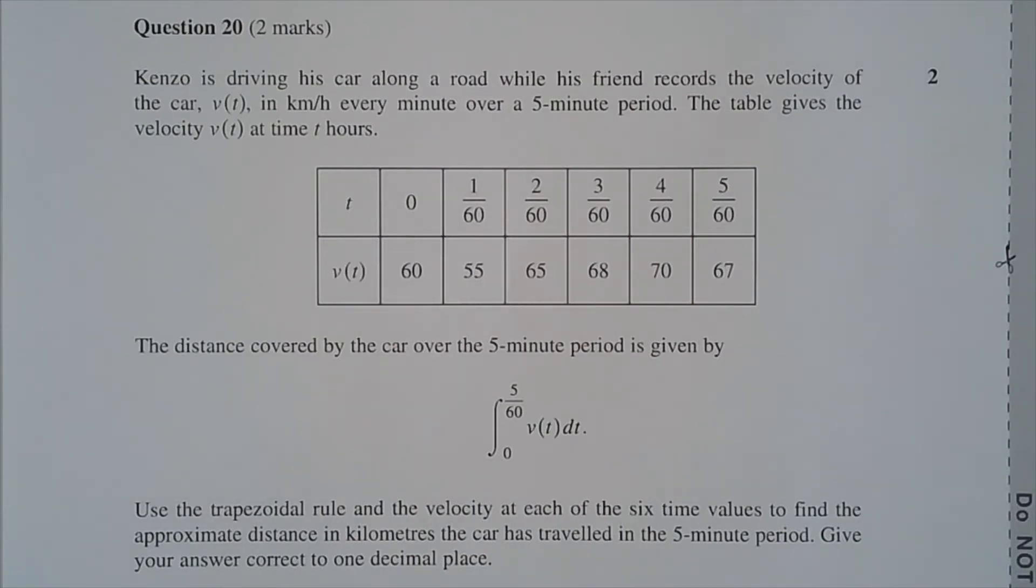The distance covered by the car over the 5-minute period is given by the integral from 0 to 5 over 60 of v of t dt.